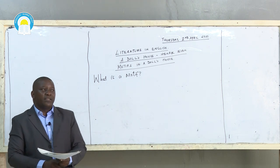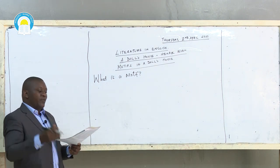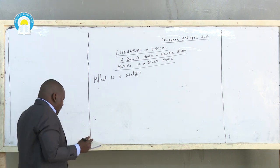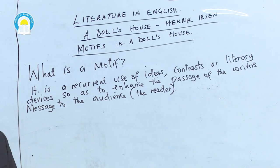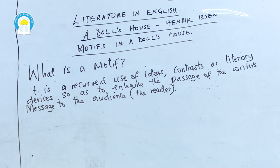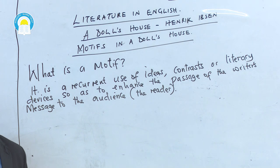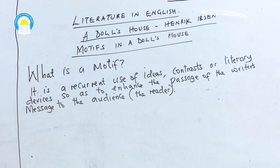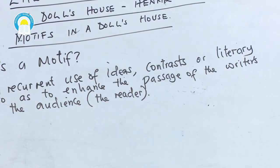So that tells you that a motif is a very important component of any literary discourse, of any literary discussion. As we focus on A Doll's House, at this point you've covered other aspects, especially concerning themes. Now that you're looking at motifs, it's important that we look at them in relation to the themes.